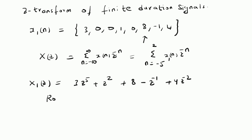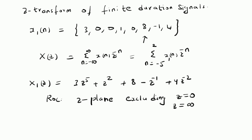This is the Z transform of the finite sequence given by X1 of n. The corresponding ROC is the whole Z plane excluding the origin and Z equal to infinity. At Z equal to infinity these values diverge, and at Z equal to 0 these two values diverge. So the ROC should not include Z equal to 0 and Z equal to infinity.